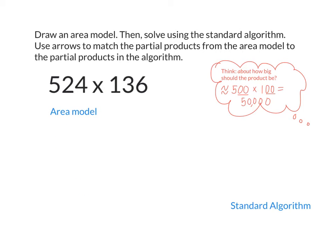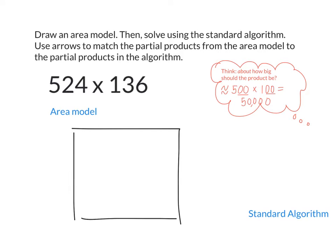Now let's do an area model. Area models always start with what shapes? Rectangles. Our first factor is 524. How many parts should I break that up into? 3. So go ahead and divide it into 3. And we know the first part is going to be 500, the next part is going to be 20, and the last part is going to be 4. Our next factor across the top is 136. How many parts are we going to divide that into? Also 3. 100, 30, and 6.